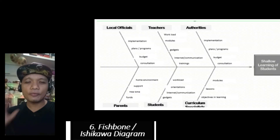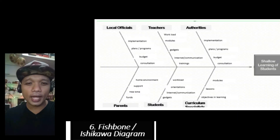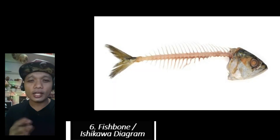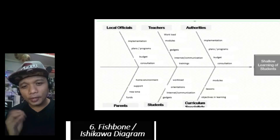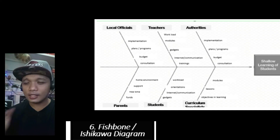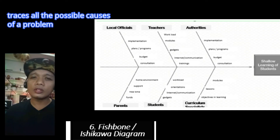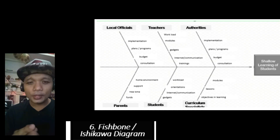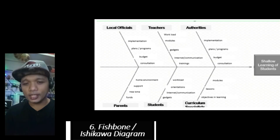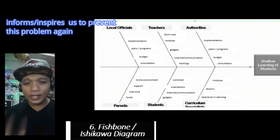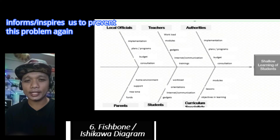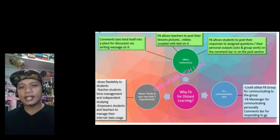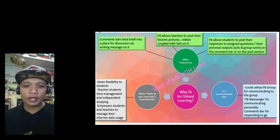Number 6 is the Fishbone or Ishikawa Diagram. This one's shape is like a fishbone. It is a critical graphic organizer because it not only traces all the causes and culprits of a problem — it also allows and inspires us to prevent the problem from happening again by really focusing on the causes of the problem.